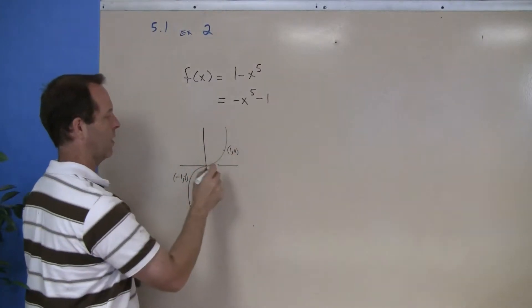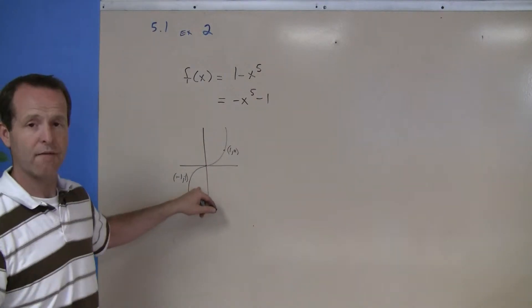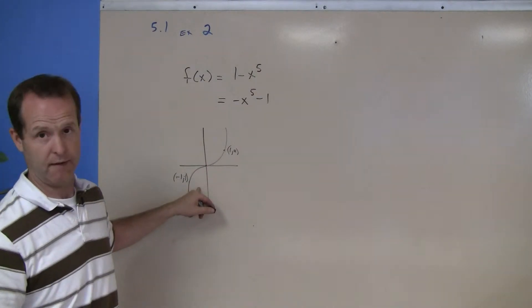And backwards here at negative 1 comma negative 1. So there's a rough idea of what the graph x to the fifth looks like.